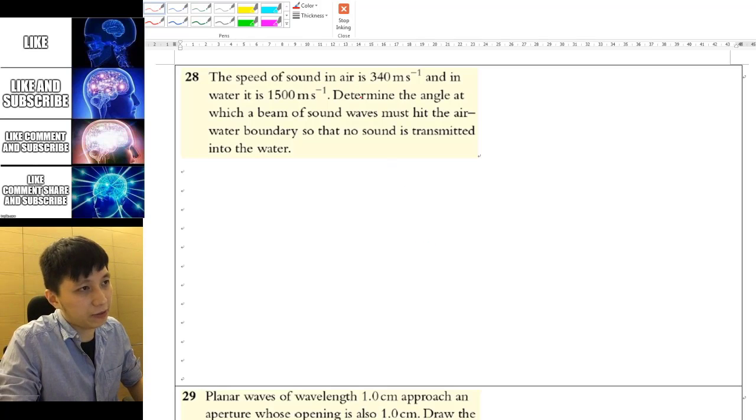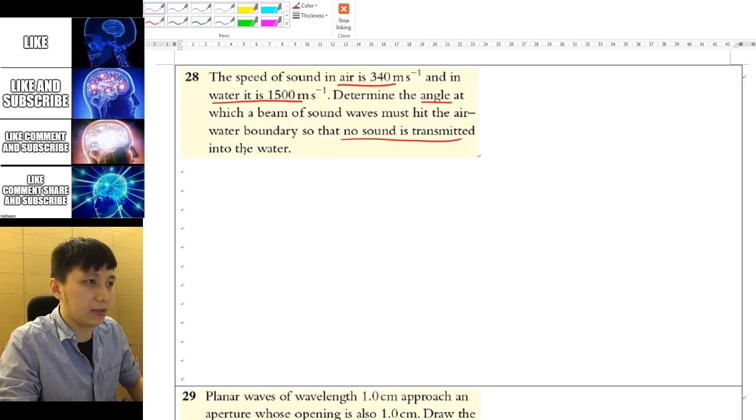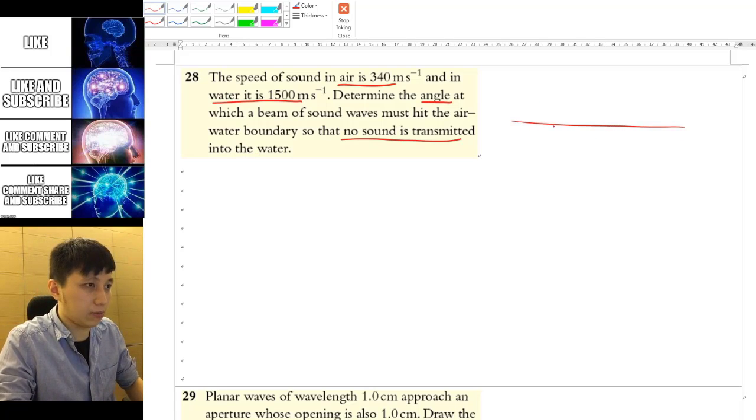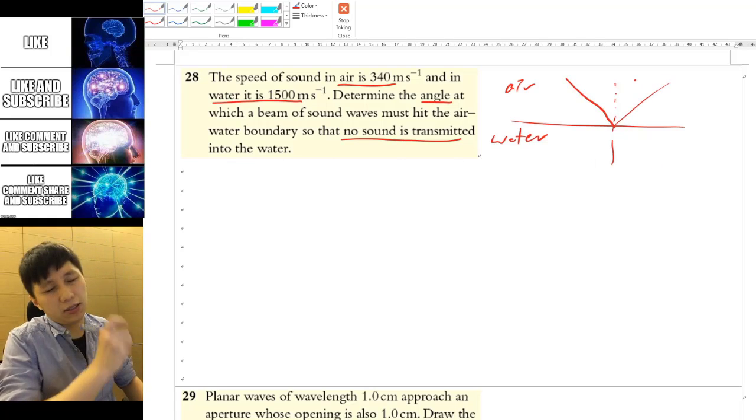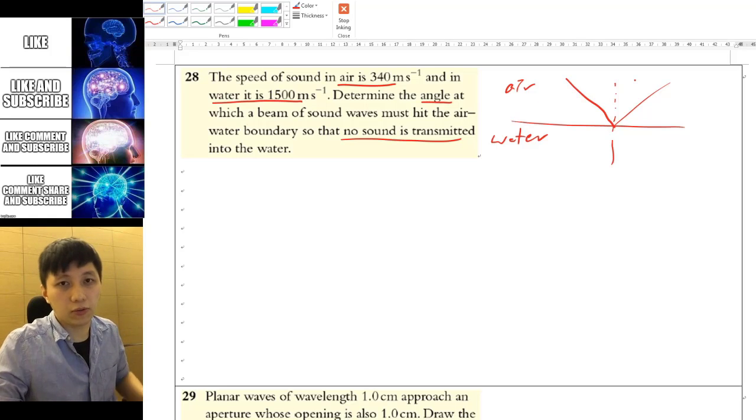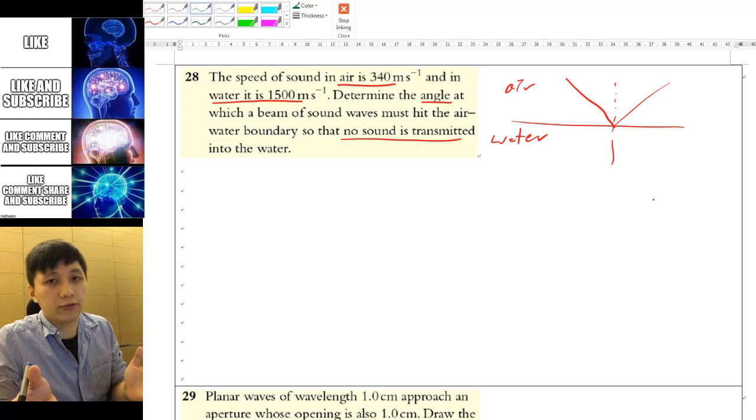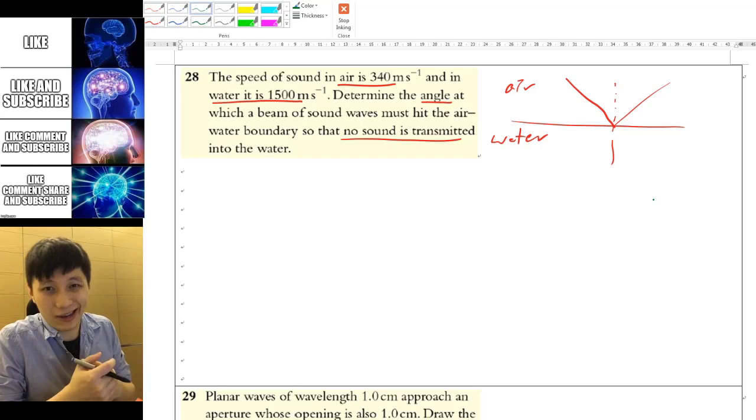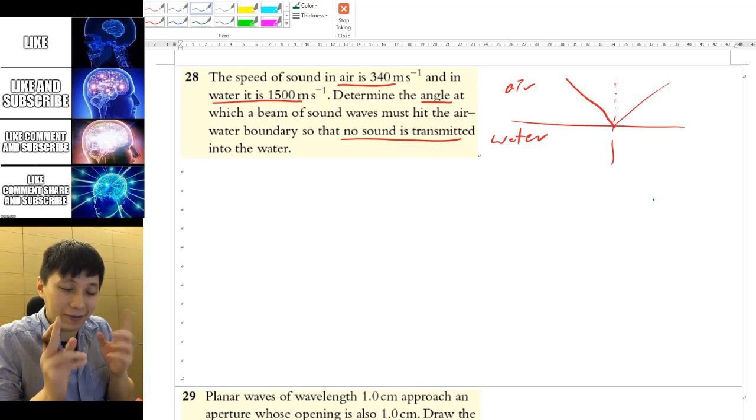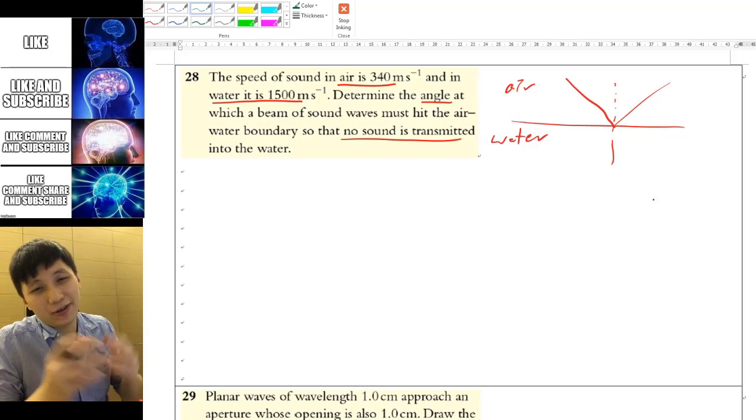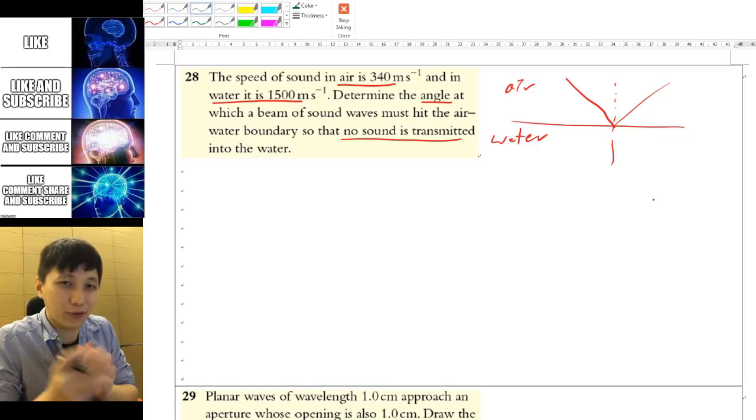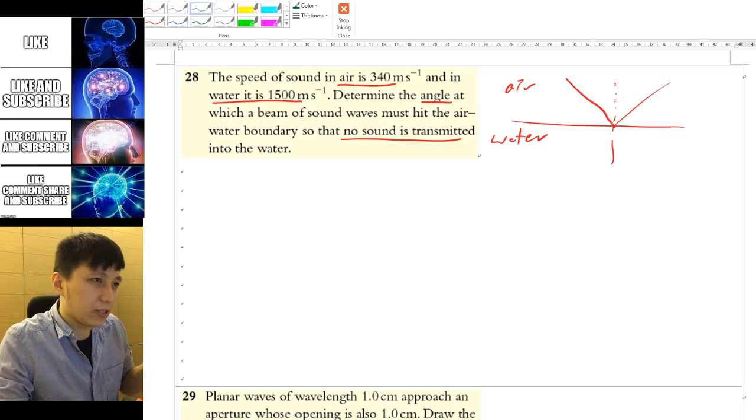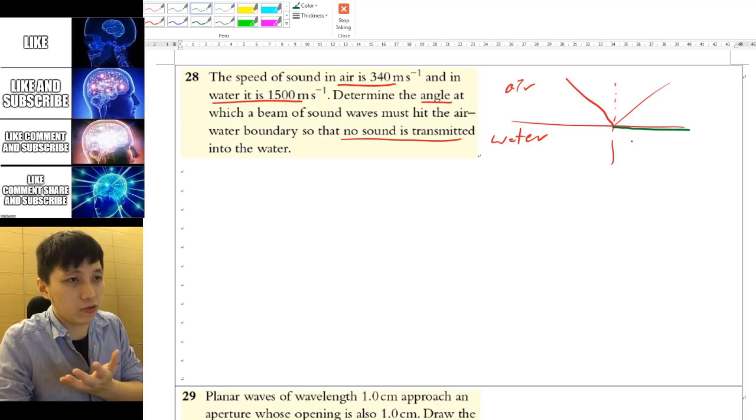Question 28. It has given you the speed of sound in air and also in water. And it asks you the angle so that there's no sound will be transmitted into the water. So you can draw a diagram something like from air to water. And then there's a certain angle going in and nothing will go inside the water. You just reflect. This is exactly the idea of total internal reflection. So in case you don't remember that, you can refer to another video of mine, which I'll teach in IGCSE. But anyway, the idea is very simple.